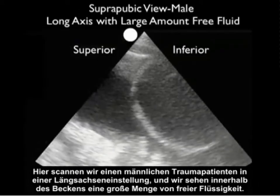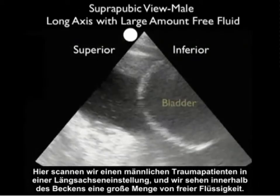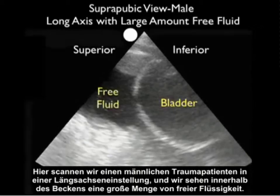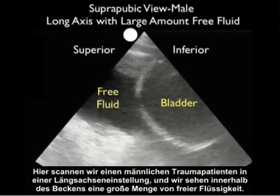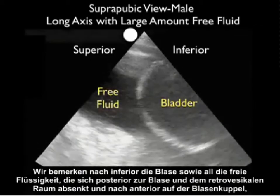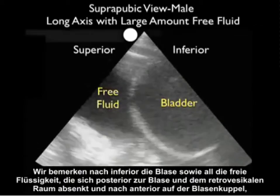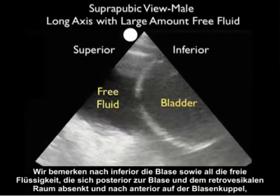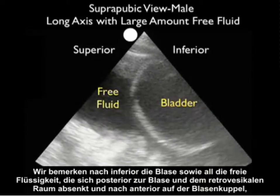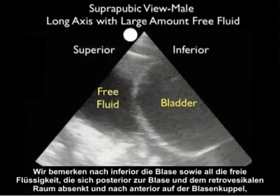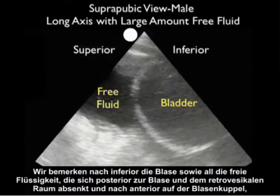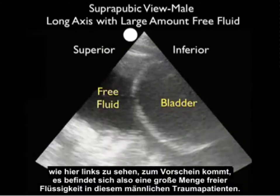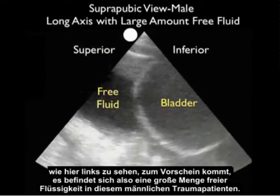Here we're scanning a male trauma patient with a long axis configuration and we see a large amount of free fluid within the pelvis. We note the bladder inferiorly and all the free fluid layering out both posterior to the bladder in the retrovesical space and coming anteriorly onto the dome of the bladder. This represents a large amount of free fluid in this male trauma patient.